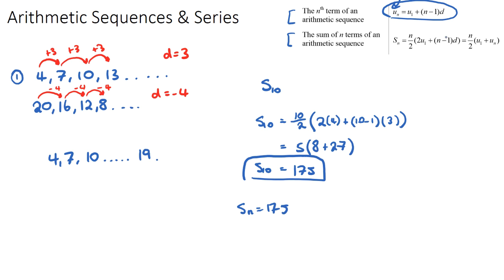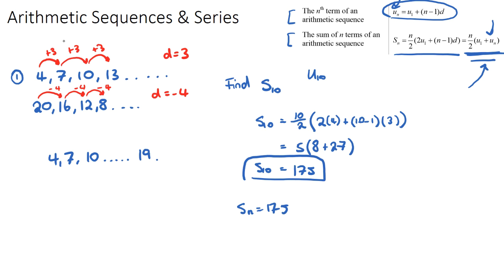There is also a shortcut sum formula: Sn equals n over 2 times (u1 plus un). You can use this version if you already know the last term. For example, if a question asks you to find u8 first and then find the sum of the first 8 terms, you already know u8 and can use the shortcut formula directly. To summarise: an arithmetic sequence is a sequence of terms with a common difference, and a series is the sum of those terms.